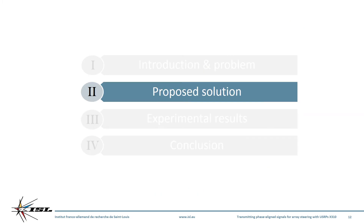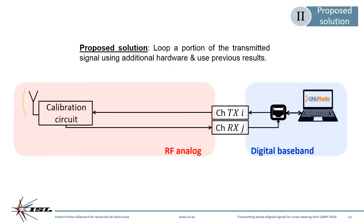That brings us to the second part of the presentation: the solution we propose. We stated we wouldn't be able to achieve phase alignment without additional hardware, so that is what we added. The idea is to loop a portion of the transmitted signal using passive RF components placed between the USRPs and the transmitting array, and build on the previous results to measure and compensate for the phase shifts in software.